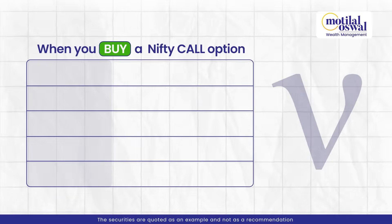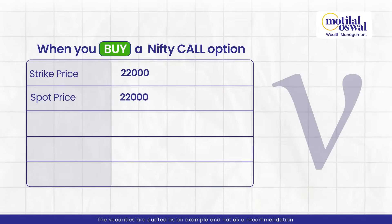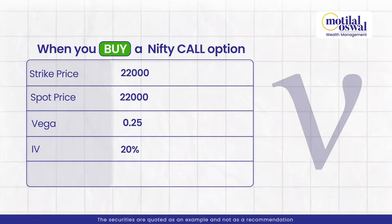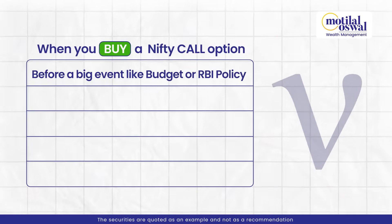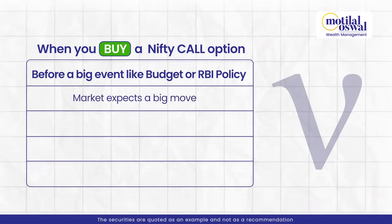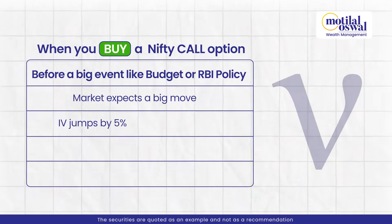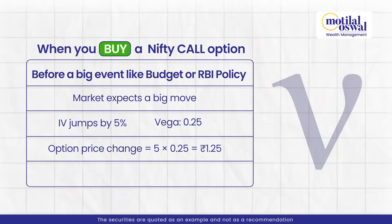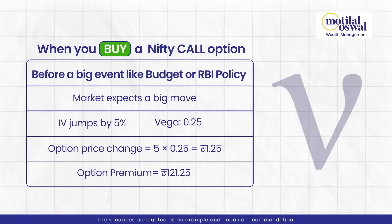Let's say we have a bullish view and we are buying a call option on Nifty at the 22,000 strike with the market at 22,000. Assume Vega is 0.25, IV is 20%, and the premium is 120. Before a big event like a budget or RBI policy, the market expects a big move, so IV rises from 20% to 25% — a 5% jump. With Vega at 0.25, the change is 1.25 (5 multiplied by 0.25).